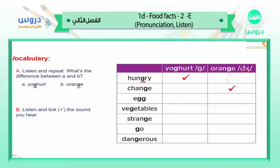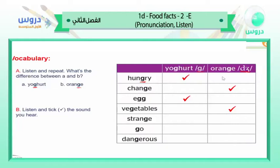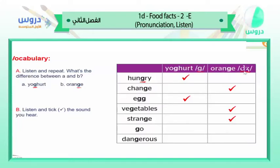Excellent — 'change' is 'ja,' just like orange. 'Egg,' 'egg' — just like yogurt, the sound 'ga.' Very nice. 'Vegetables,' 'vegetables' — excellent, just like orange, 'ja.' 'Strange,' 'strange' — also just like orange, 'ja.' We cannot say 'strange' with a 'ga' sound — that's wrong.